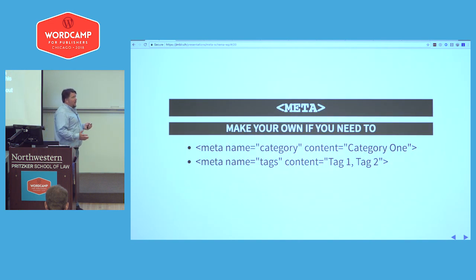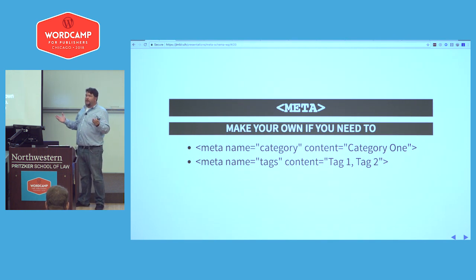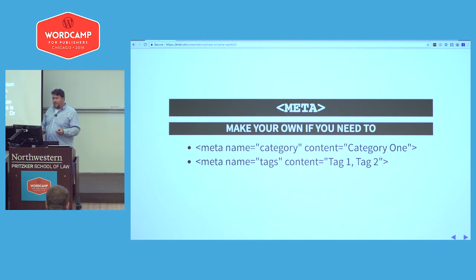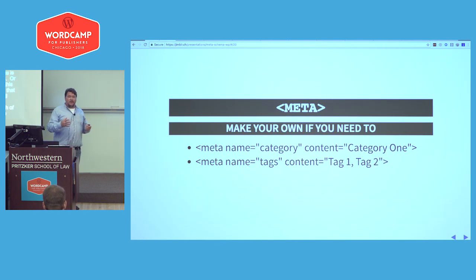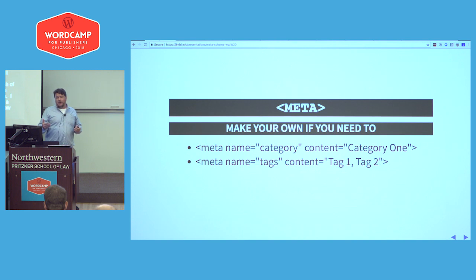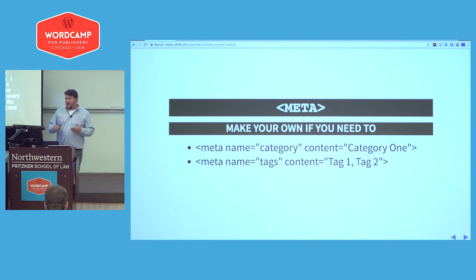You can make your own meta tags if you need to — simply follow that name-value pair. A common thing in WordPress is to have your categories or your tags, and you do this if you need to consume that data later. For example, we'll look at the Wall Street Journal, which has a bunch of custom tags they're consuming on their own. I did a search engine for documentation where a new version would come out every quarter, and we added the version number as a tag and then weighted the search results using that tag.